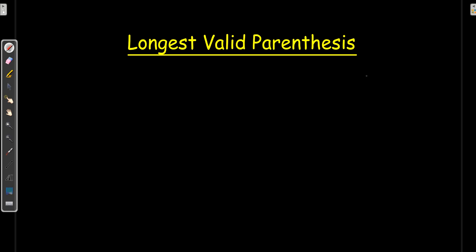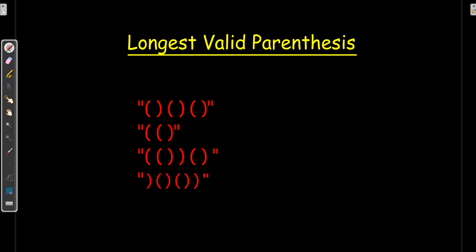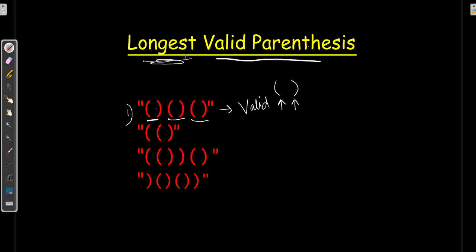Hello, welcome to Netset OS. Today in this video we will discuss a very famous interview question: Longest Valid Parenthesis. Valid parenthesis means parentheses which are in pairs — they have both open and close braces. In this question, given an expression, we need to find the longest balanced parenthesis, meaning it should not only be valid but also contiguous.